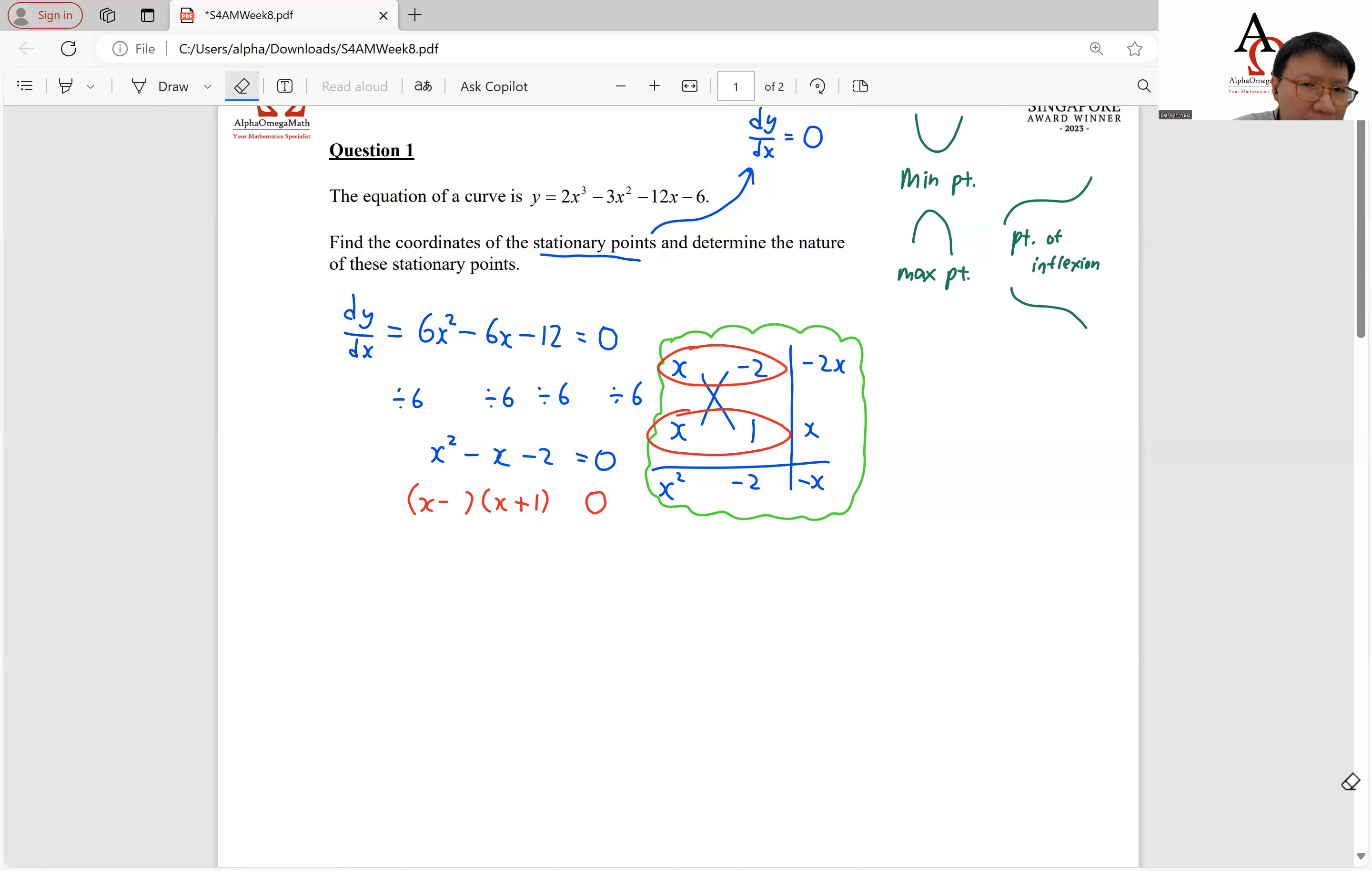So if we solve the two equations here in the zero product rule, we will be able to find the two x values. So what we have is x equals to 2 or x equals to negative 1. So these are the two x values for our two existing stationary points. And we will sub them into the curve equation to solve all the y coordinates and therefore have the entire points.